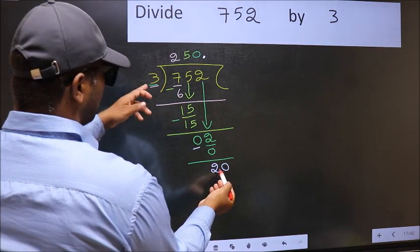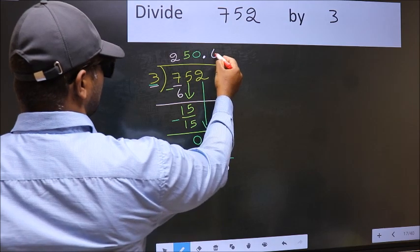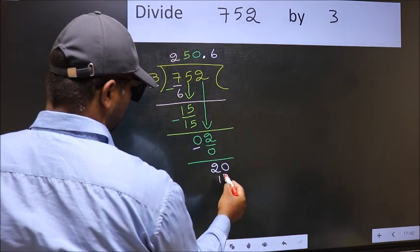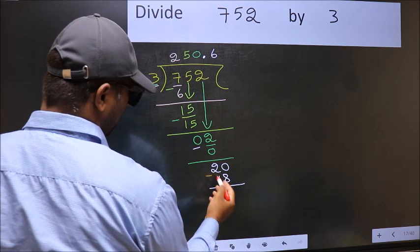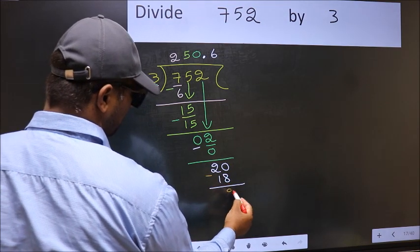A number close to 20 in 3 table is 3 times 6, 18. Now, you should subtract 20 minus 18, 2.